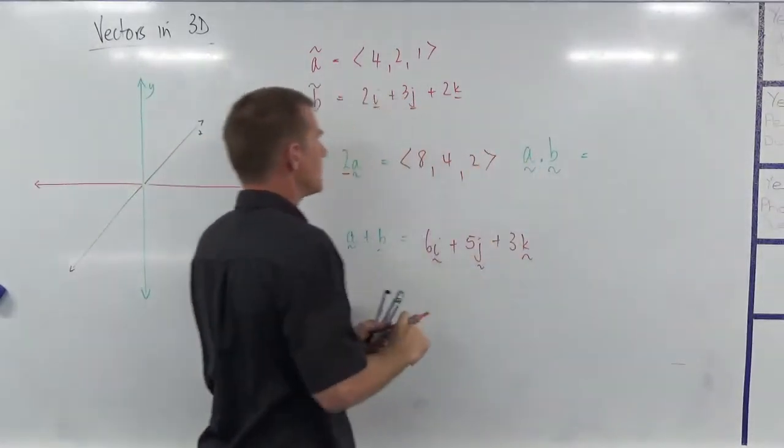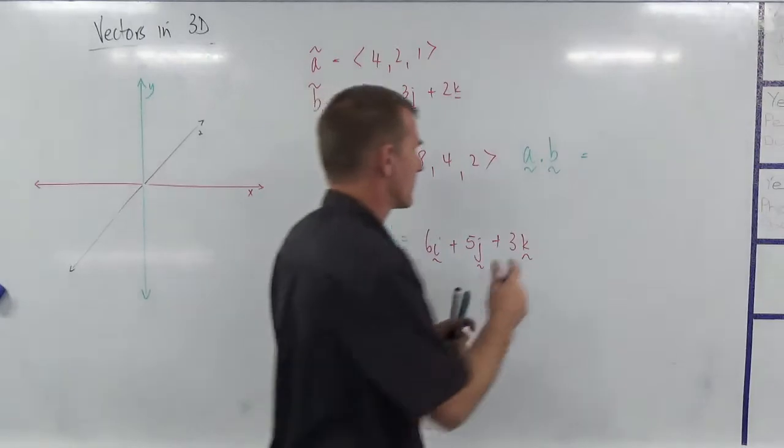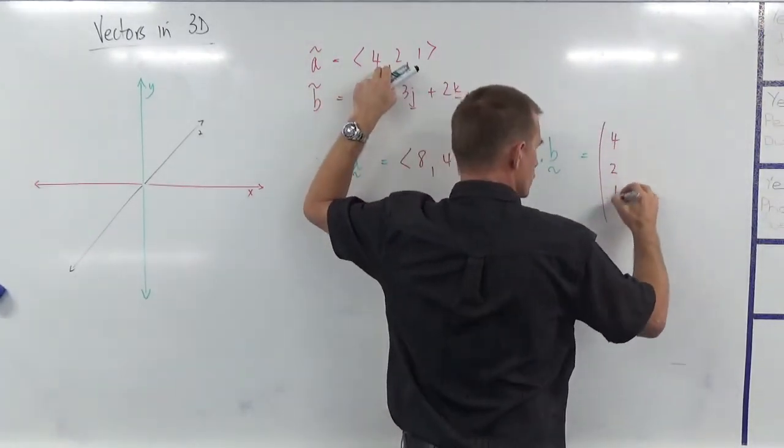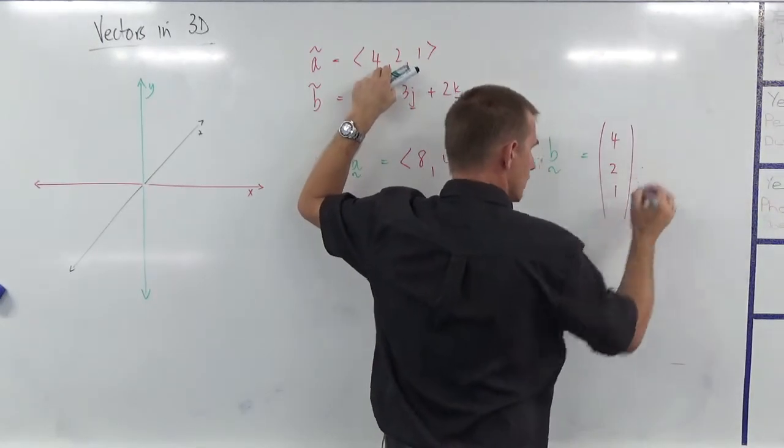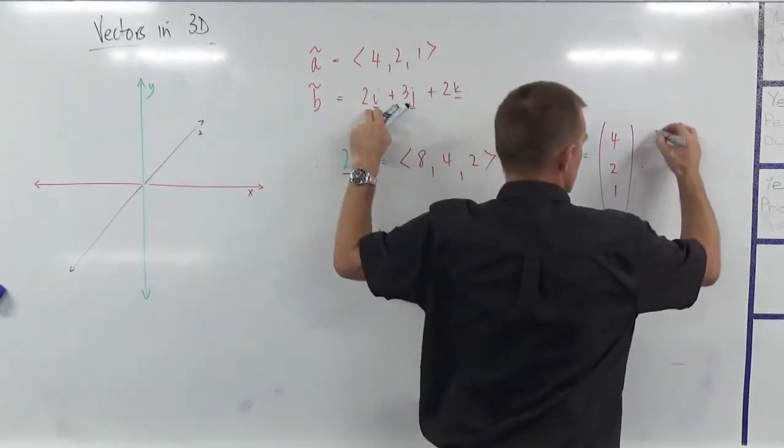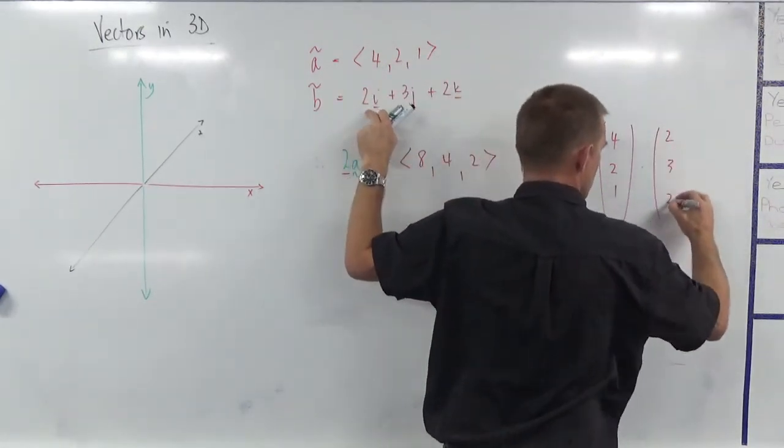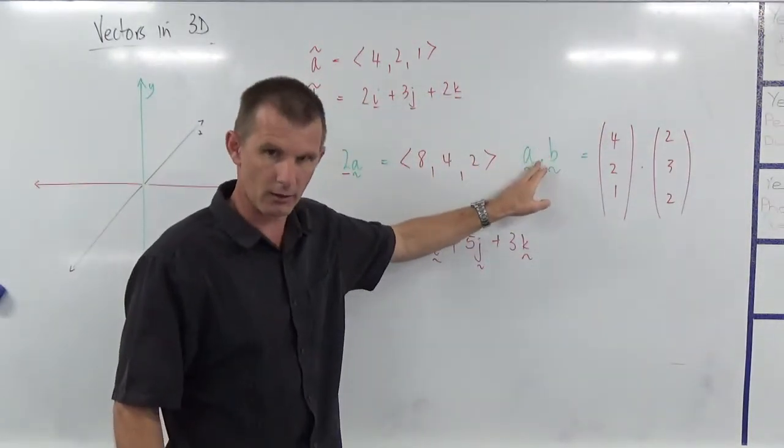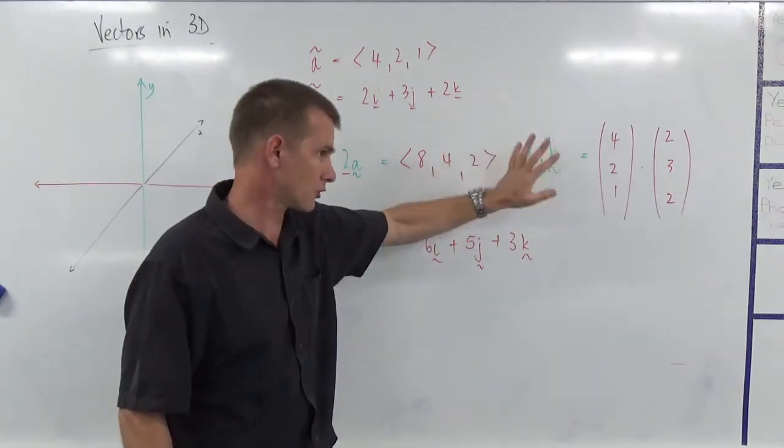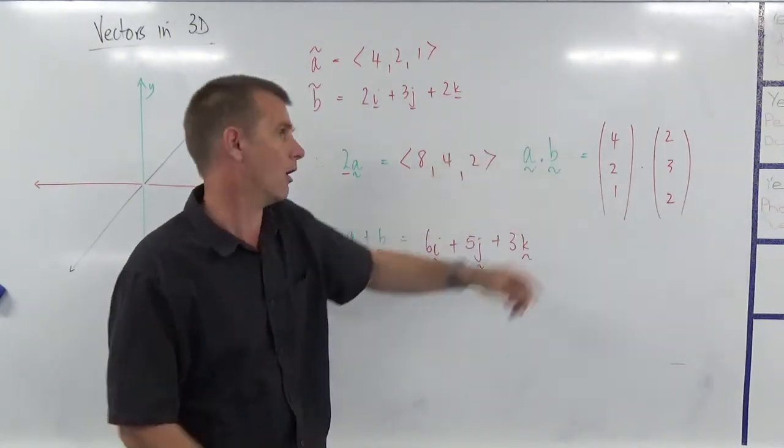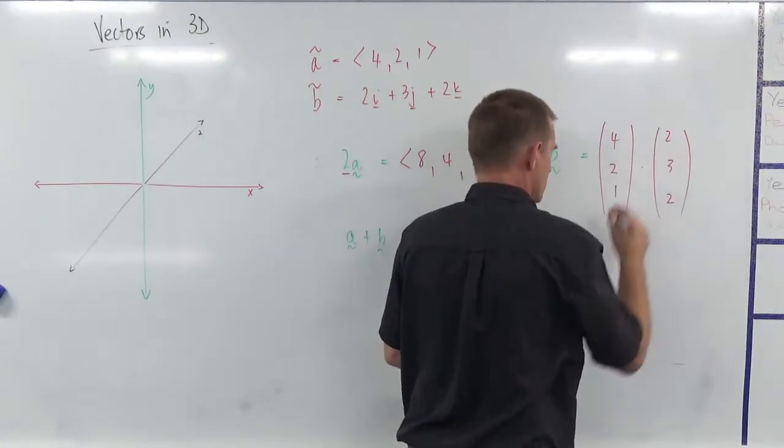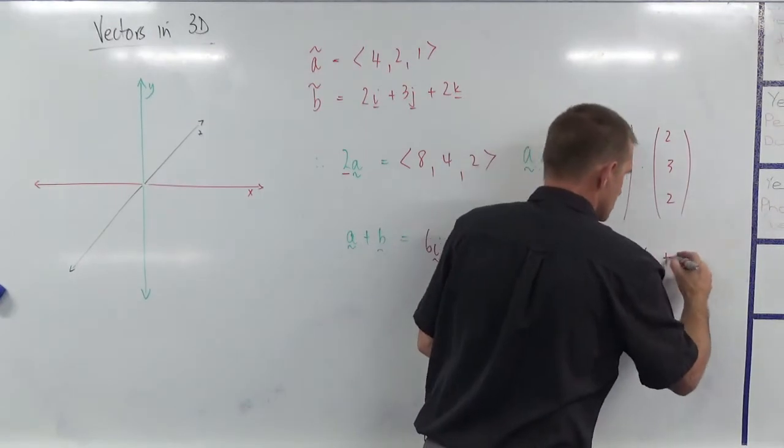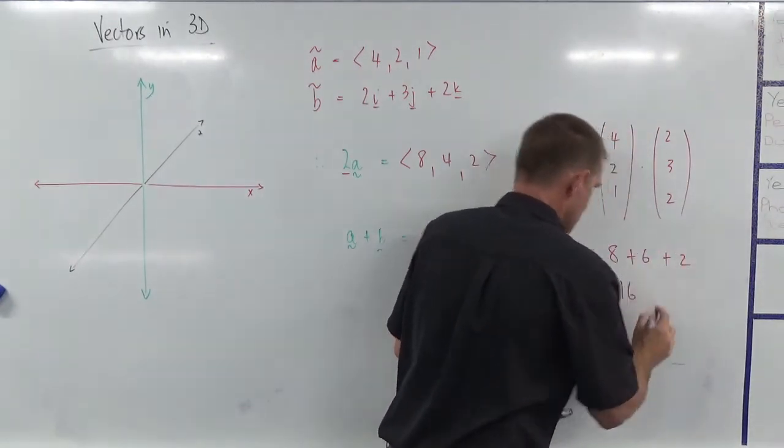A dot b. Now this is where a third notation is going to be really handy. So I'm going to actually write it as 421 dot 232. That's the easier way to write both dot product and cross product. We're only doing dot product, but cross product, this is going to be handy as well. Because now I just go 4 times 2 is going to be 8. 2 times 3 is 6. And 1 times 2 is 2. There we go, 16.